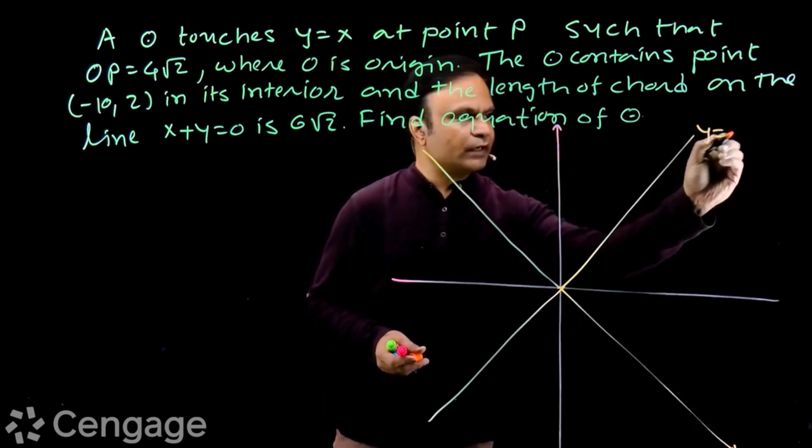We need to find the equation of the circle, which means we need the center and radius. Some data is given: point P, origin O, distance OP = 4√2, and chord length = 6√2. When there is a chord, we must drop a perpendicular from center to the chord. Similarly, from the center we drop a perpendicular to the tangent, which meets at point P. This forms a rectangle CPOM, and all angles are right angles.